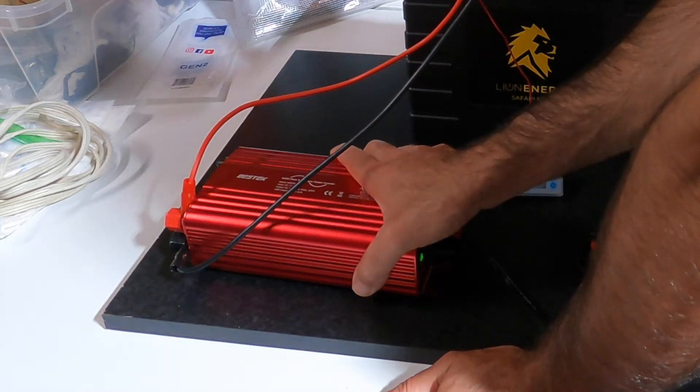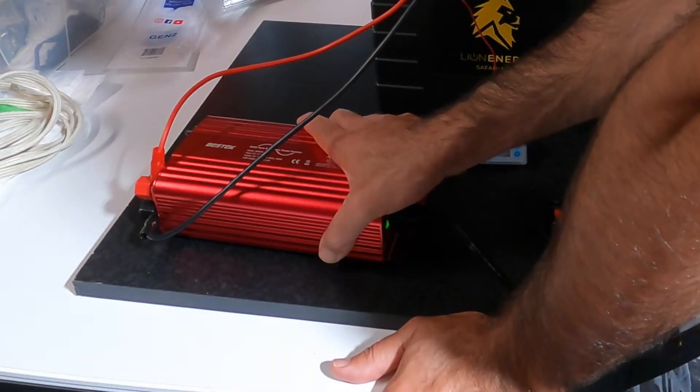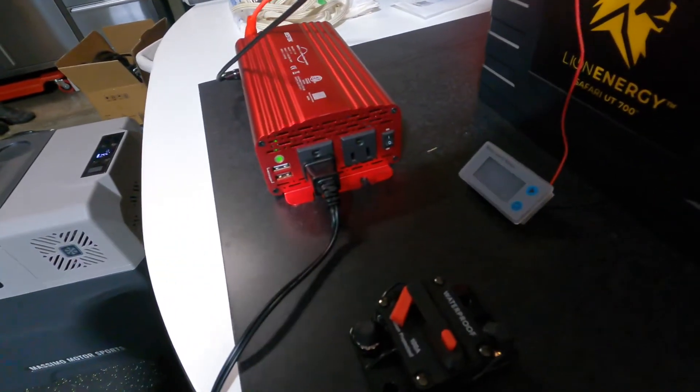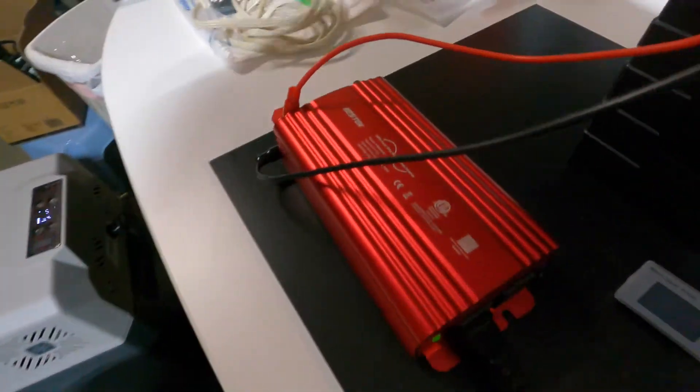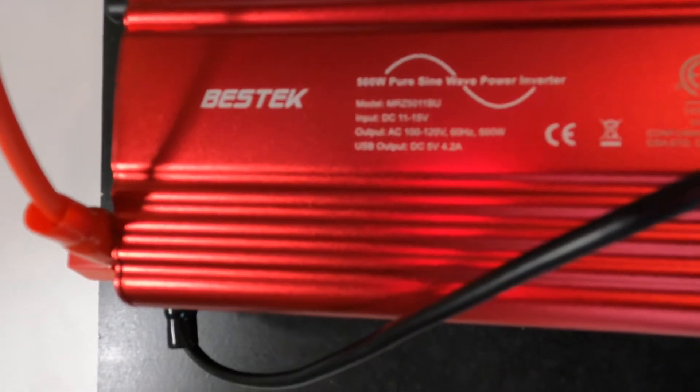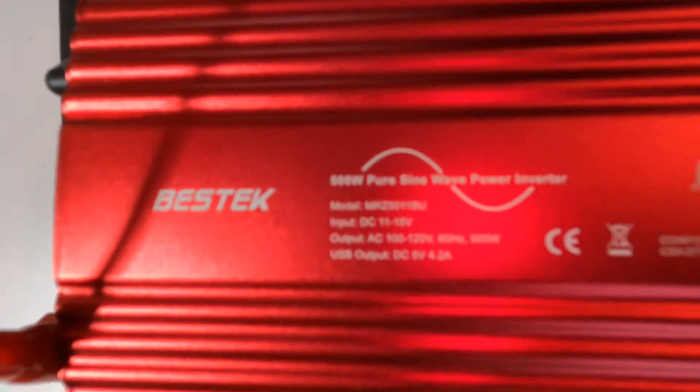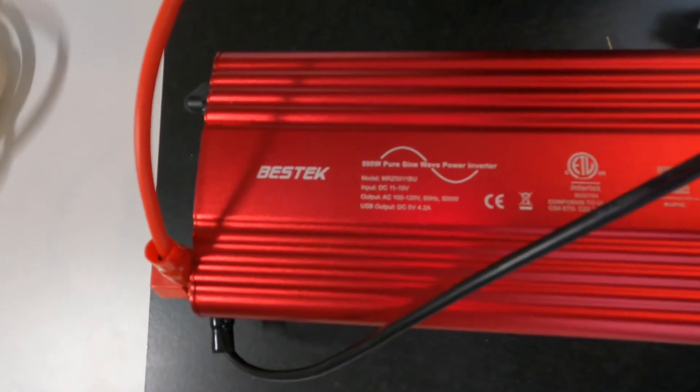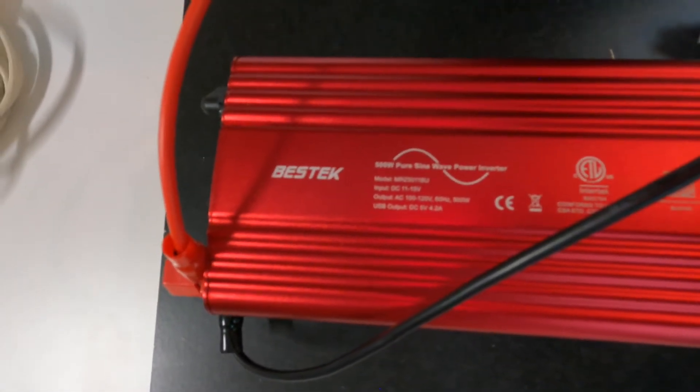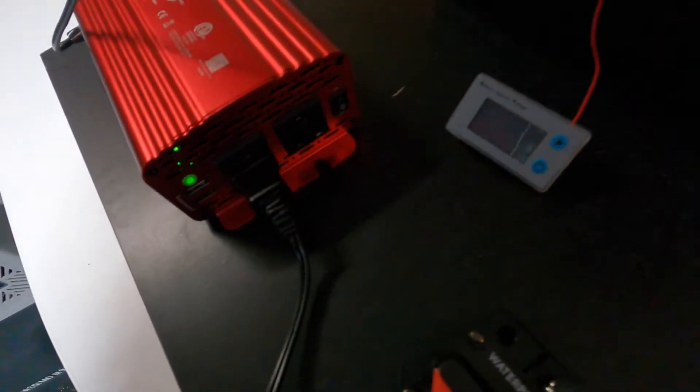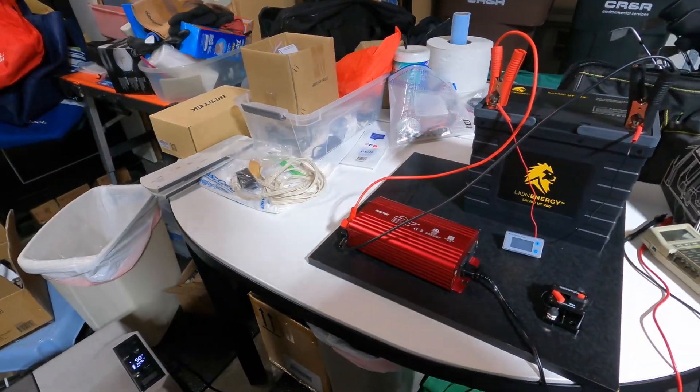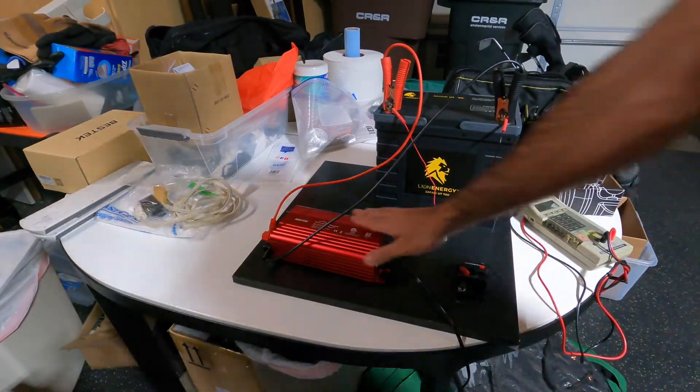Got this Bestech 500 watt pure sine inverter. It's got two AC outlets, two USB outlets, DC input 11 to 15 volts, output AC 100-120 volts 500 watts, USB out DC 5 volts 4.2 amps. There's two USB outlets and two IEC outlets, 500 watts pure sine, so you're supposed to get 500 pure watts.